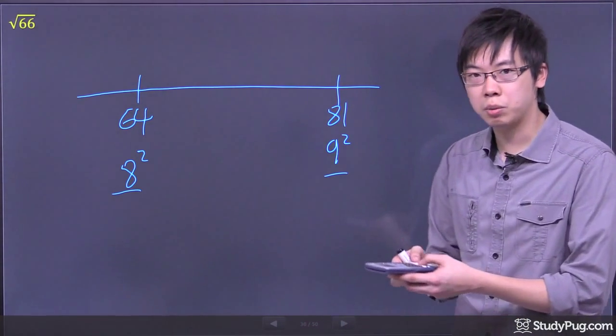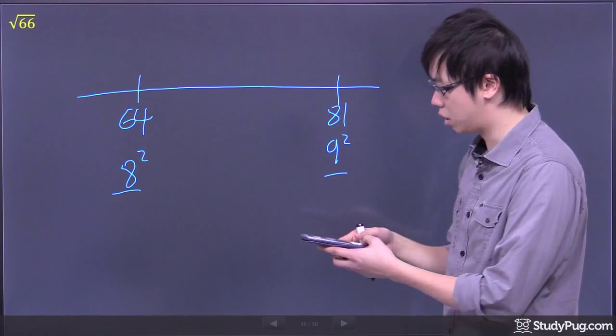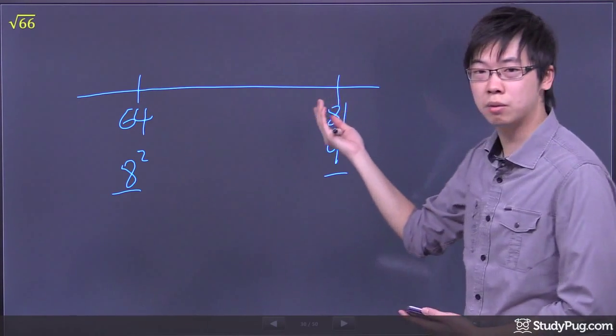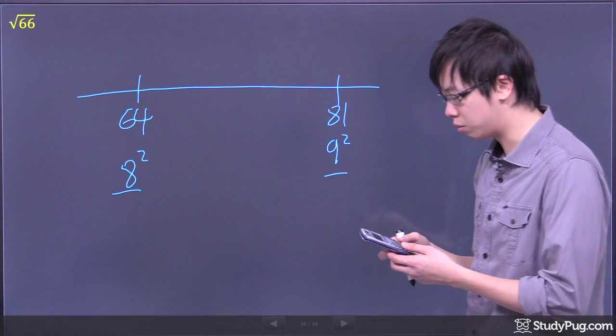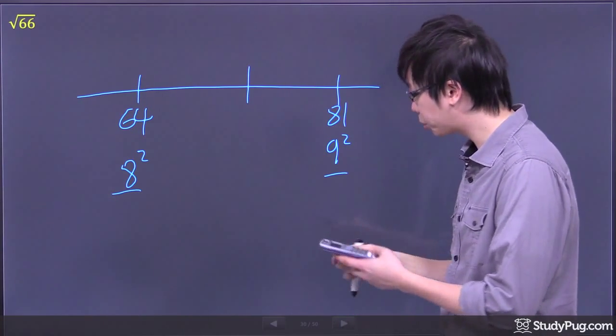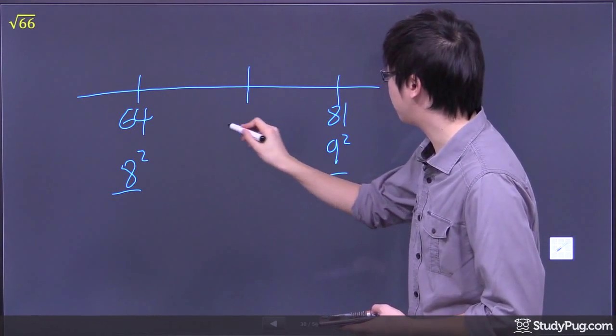Well, we can actually calculate it approximately, estimation. Take the 81 right here and subtract the 64. There's 17 units across from 64 to 81. So I'm not gonna do all of them though. I'm just gonna cut it in half. So this will be 8.5.